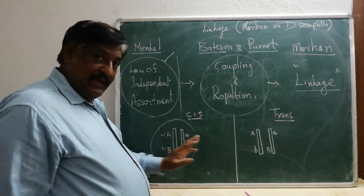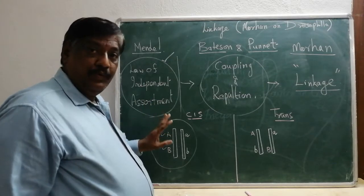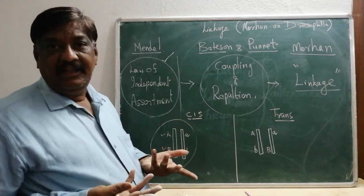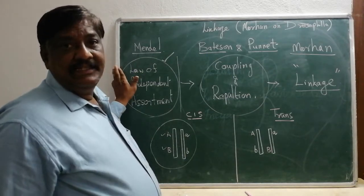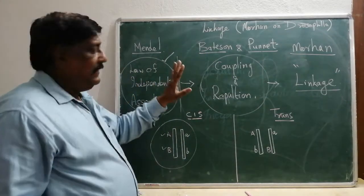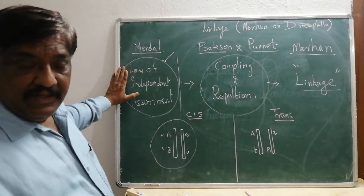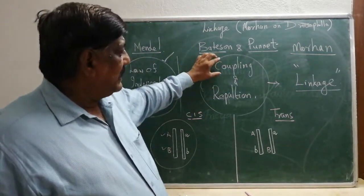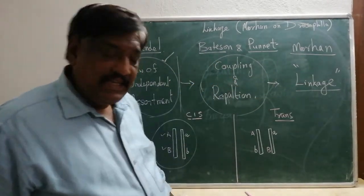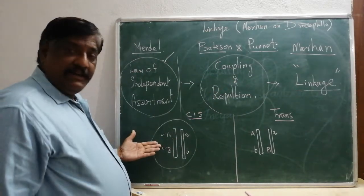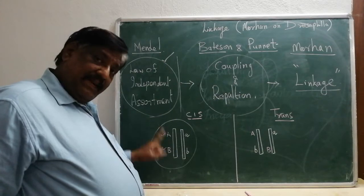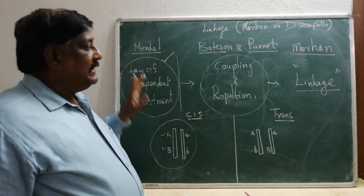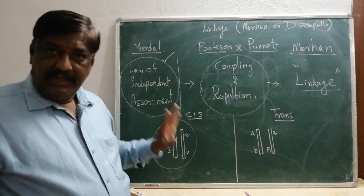Actually during gamete formation, A and B should go separate, but they don't because they are in the same chromosome — so they like to go together. When they go together, the results are not the same as what Mendel produced. So Mendel did the two-gene independent assortment experiment; Bateson and Punnett found coupling and repulsion factors; and Morgan later explained it as linkage — when both dominant genes are present in the same chromosome they tend to go together and don't obey the Law of Independent Assortment.